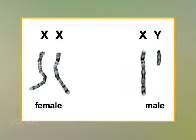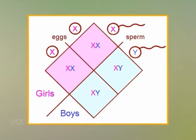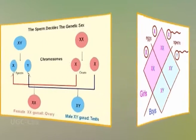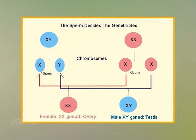Primary sex determination is the determination of gonads. In most cases, the female is XX and the male is XY. Every individual must have at least one X chromosome. Since the female is XX, each egg has a single X chromosome. The male, being XY, can generate two types of sperm — half bearing the X chromosome and half the Y. If the egg receives another X chromosome from the sperm, the resulting individual is XX, forms ovaries and is female. If the egg receives a Y chromosome, the individual is XY, forms testes and is male.